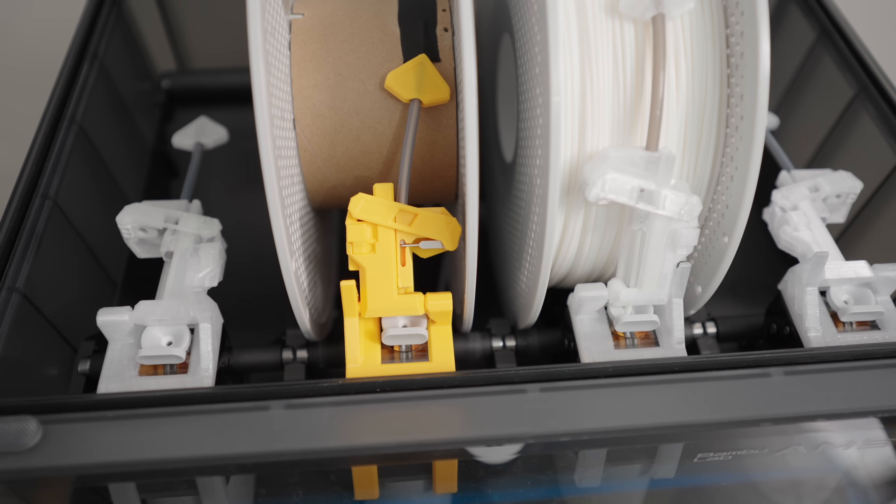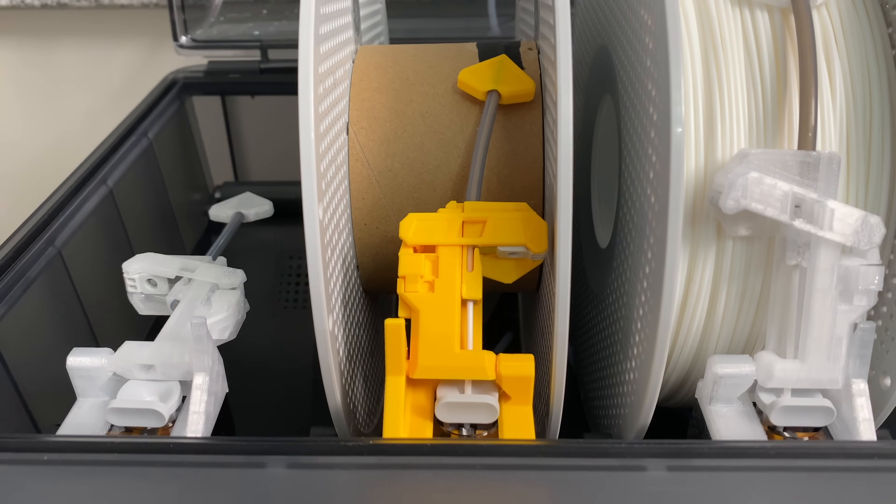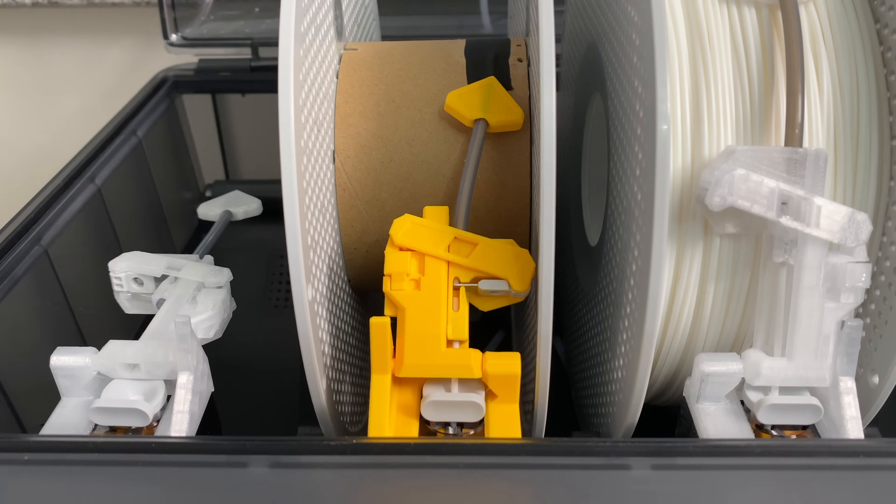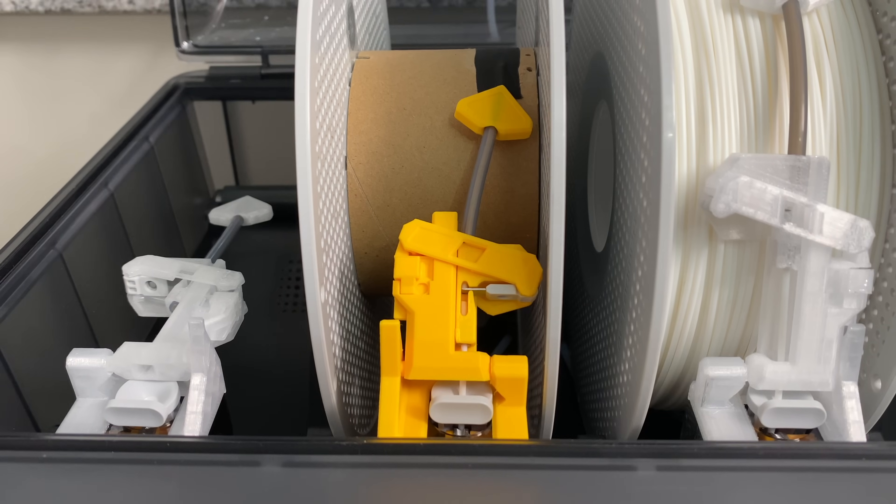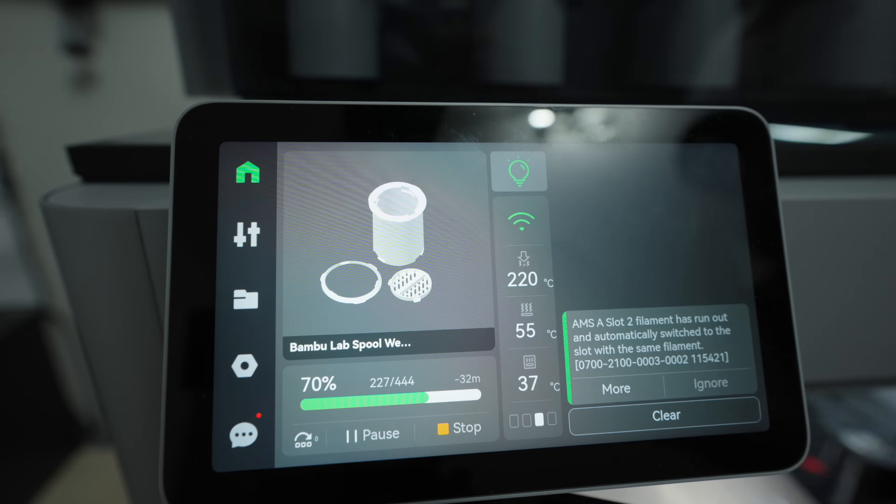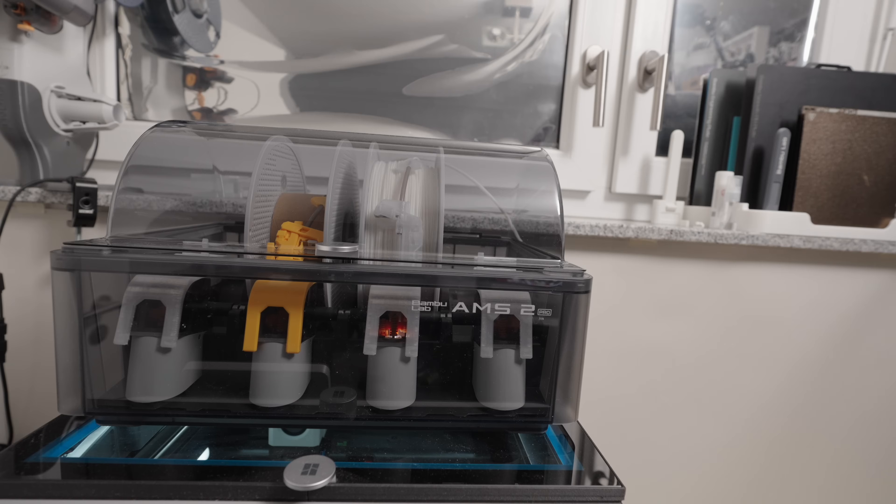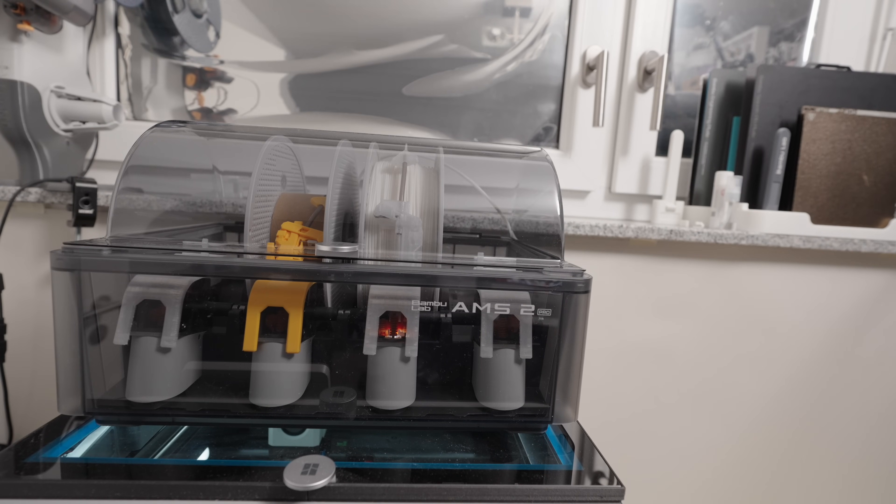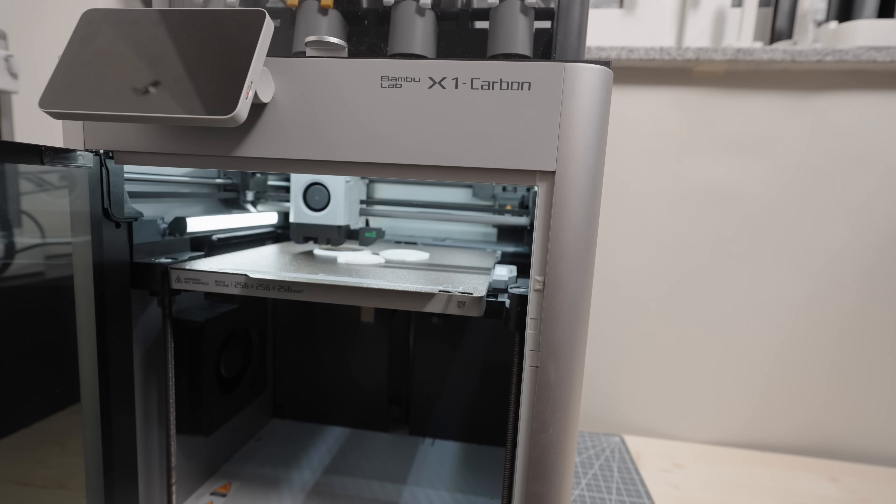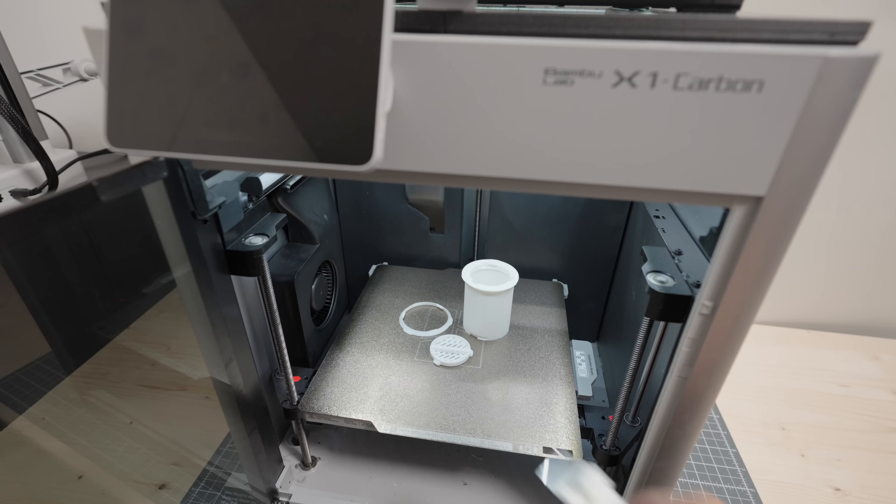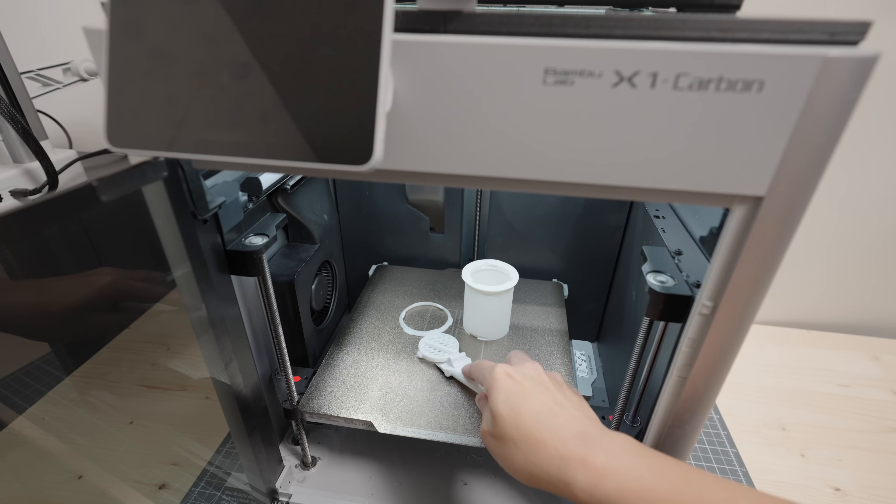So did you catch that? The black tape got stuck at the guide which then prevented the filament from being pulled and that triggered the snack cutter to cut the filament. Since the auto refill is turned on the second roll will be automatically used to continue the print once all the filaments from the first roll is used up. This doesn't just save your AMS from getting jammed by the black tape but it saves you a lot of time if this were to happen in the middle of the night or while you are away.